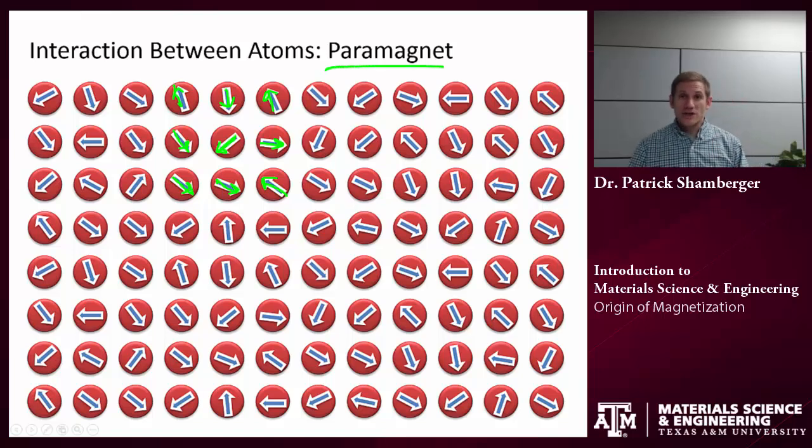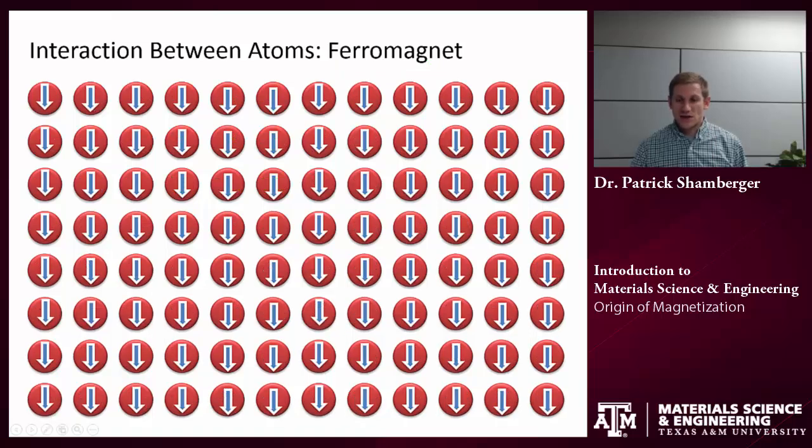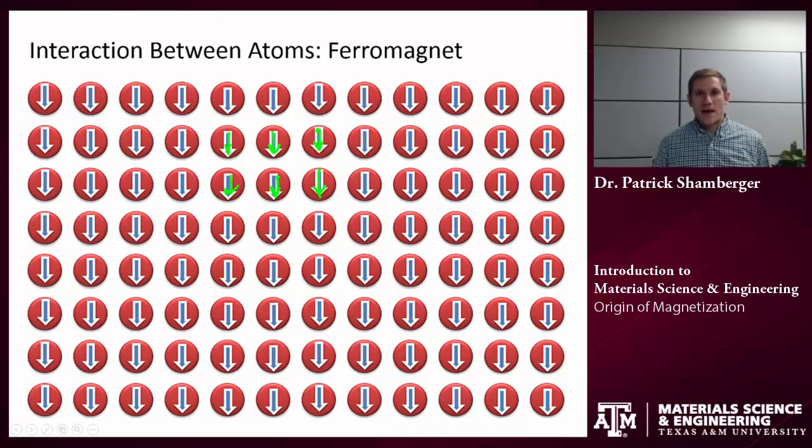Now, if I cool this paramagnet down, in some cases I can get all of those atomic moments to align. And that's what we call a ferromagnet. So this is what we think of as a permanent magnet, something that has a permanent aligned magnetic field. And in order to do that, it must have atoms that are aligned. There is some interaction energy between these different atoms that says it's going to be beneficial. The whole system will establish a lower overall energy if they're all pointing in the same direction. So again, this is what we call a ferromagnet.